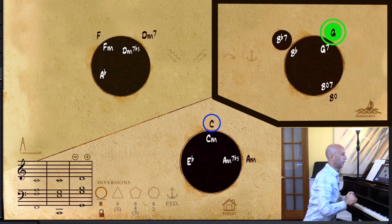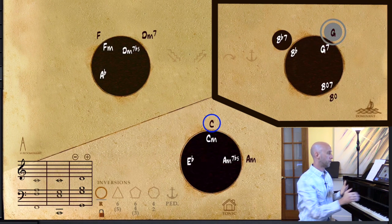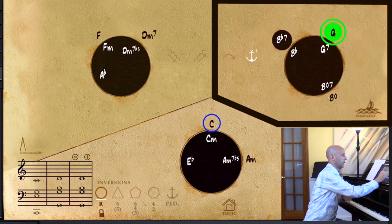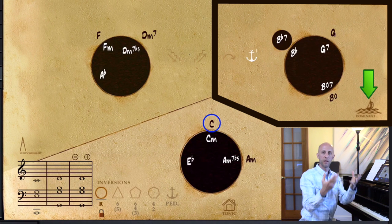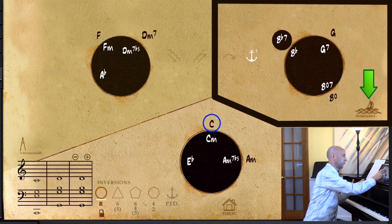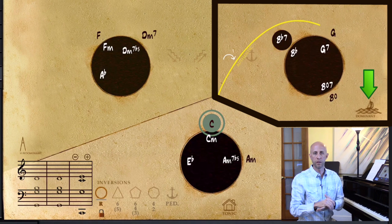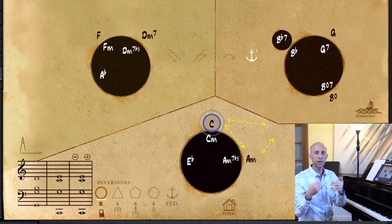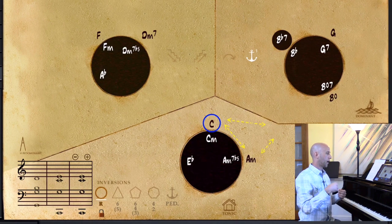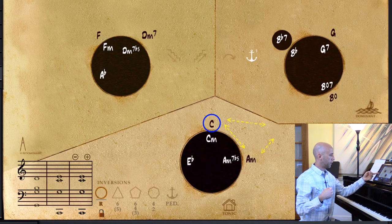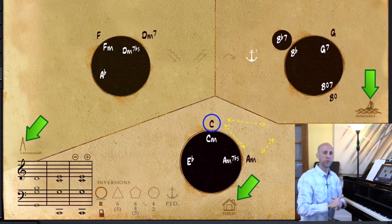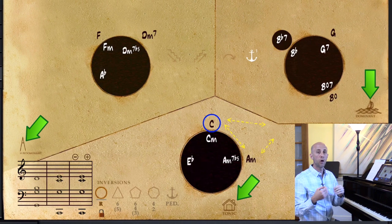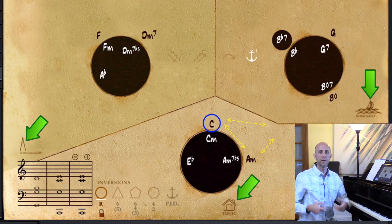Over here we have our dominant region, where all the dominant region chords reside, indicated by our choppy waters symbol — that indicates tension that wants to go inevitably back to the tonic region. So when you're looking at these three regions, as indicated by these symbols — the house, the mountain, and the choppy waters with the boat on it — they basically all represent this basic idea that all music is tension and release.